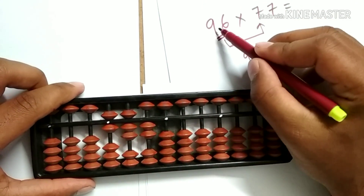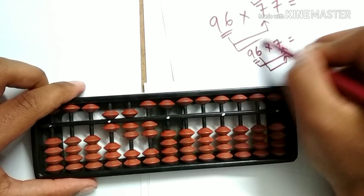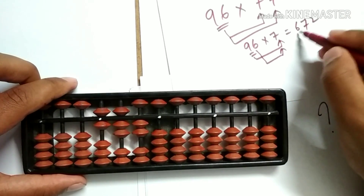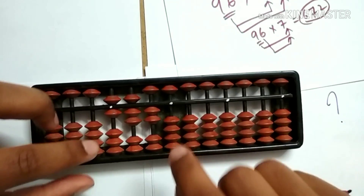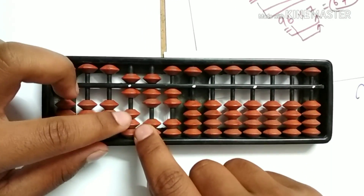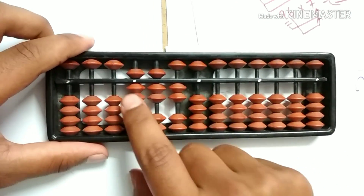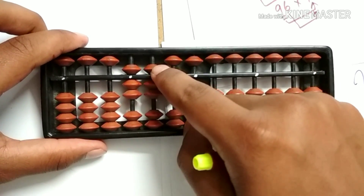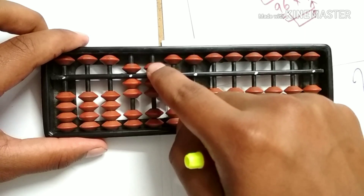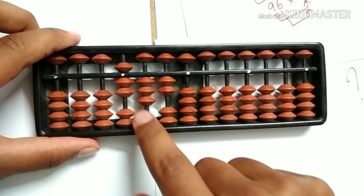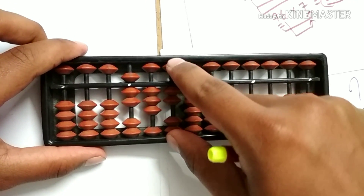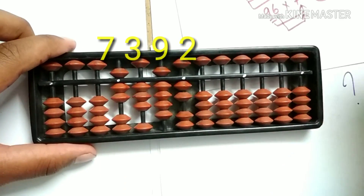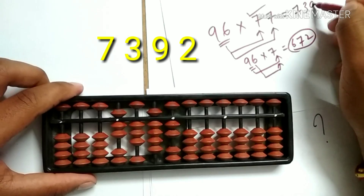This is done. Let's do the second part — 96 into 7. The answer is the same thing: 672. Let's add 672 from the 100th place. To add 6 on the 100th place — add the friend 10, less the friend 4. To subtract 4, here it is small friend subtraction — less the friend 5, add the friend 1. To add 7 on the 10th place, let's add 7 directly, and 2 on the units place. We got the answer as 7392.